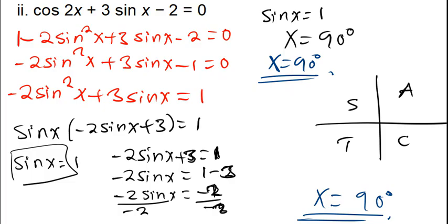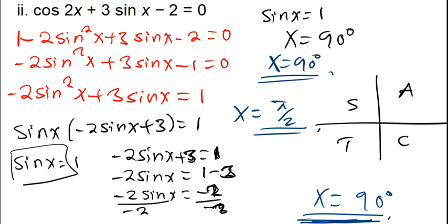The answer for this question is only 90 degrees. The question didn't specify degrees or radians, so I'll leave it in degrees. If you want to convert to radians, x = π/2, since π/2 equals 90 degrees. You can report either x = 90° or x = π/2.